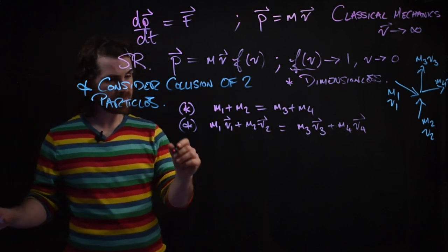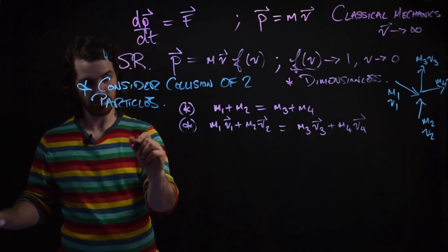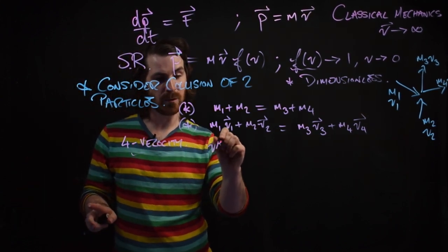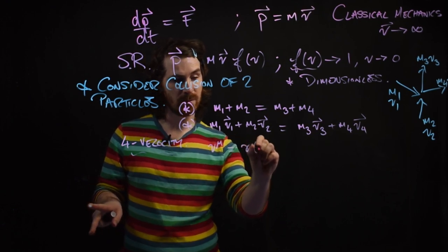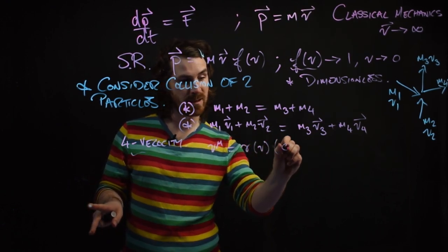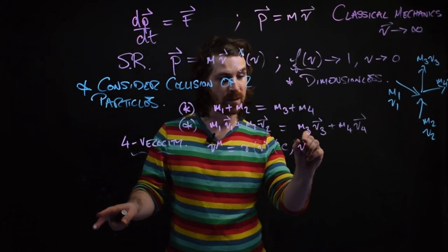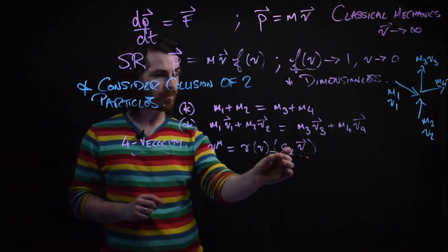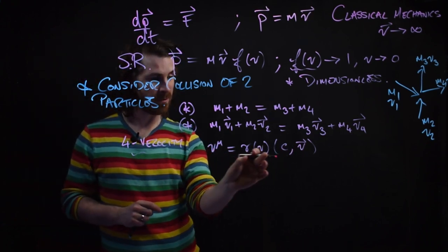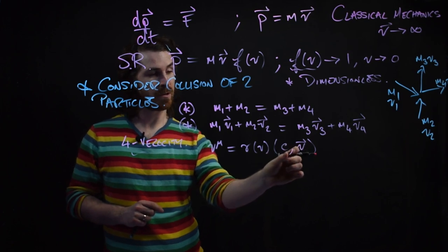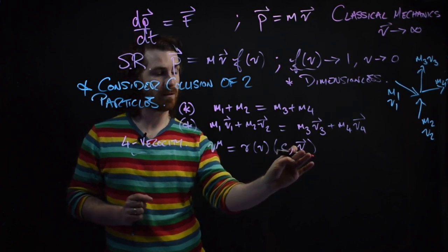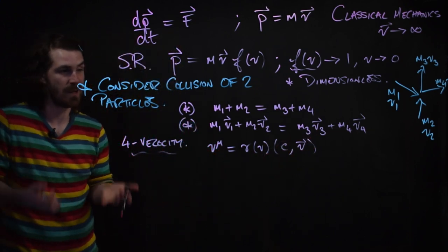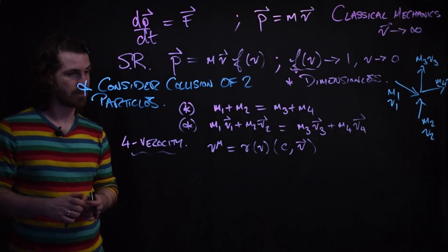We previously introduced the 4-velocity, V_mu, which is a 4-vector. It has gamma v in front of all four components: the first component is c, and components 1, 2, and 3 are the 3-velocity v — the standard vx, vy, and vz.